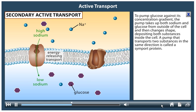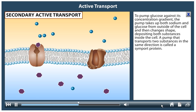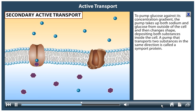To pump glucose against its concentration gradient, the pump takes up both sodium and glucose from outside of the cell and then changes shape, depositing both substances inside the cell.